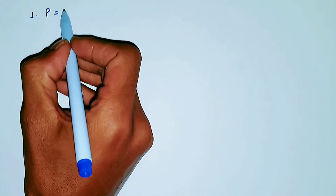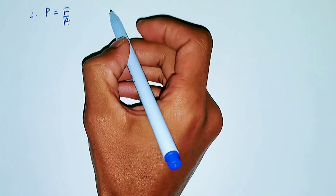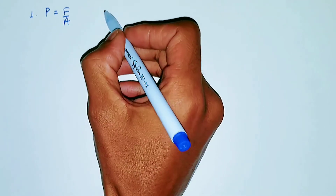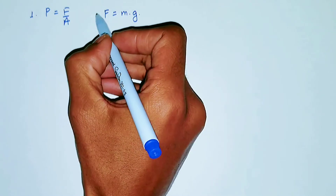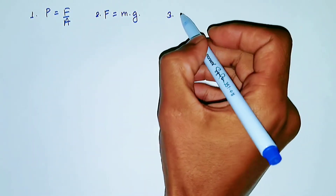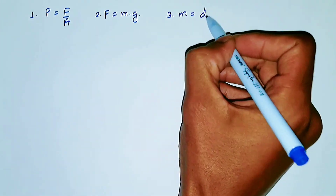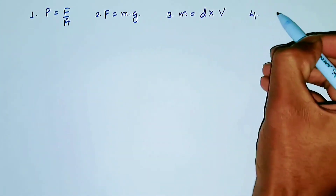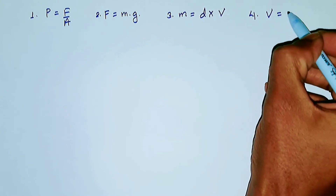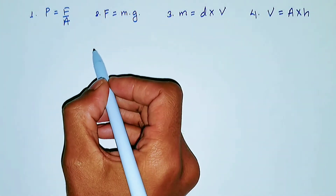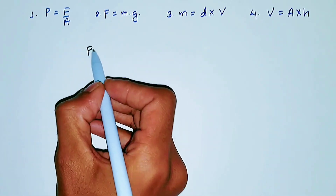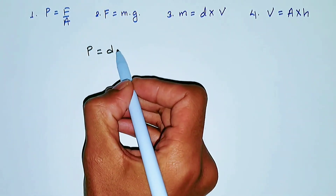So these four formulas are what you need to remember. Number one: pressure is force divided by area — this is the simple formula of solid pressure. Number two: force is mass times acceleration due to gravity. Number three: mass is density times volume. And number four: volume is area times height. These four formulas are important in deriving the formula of liquid pressure, which is P equals D times H times G.